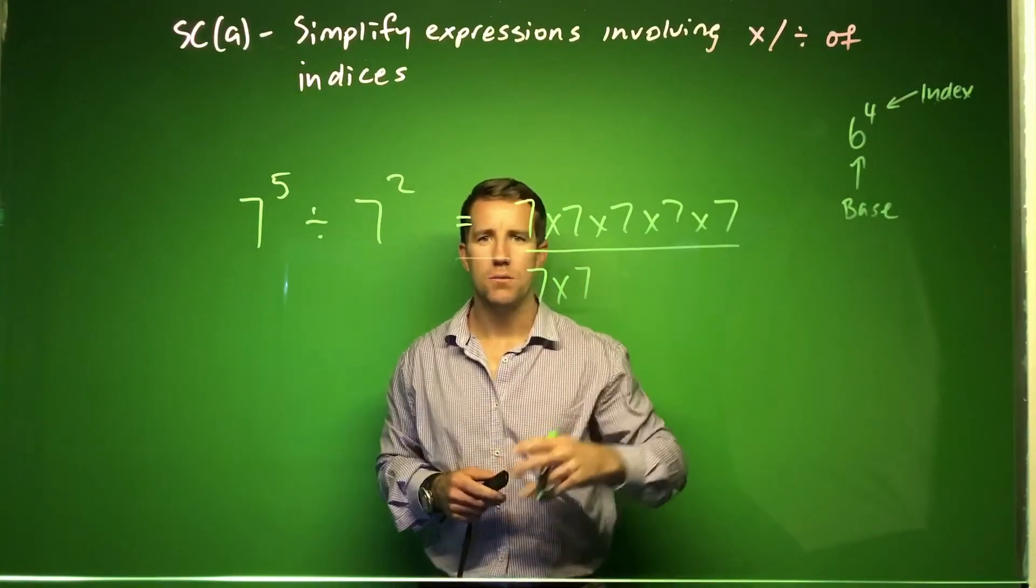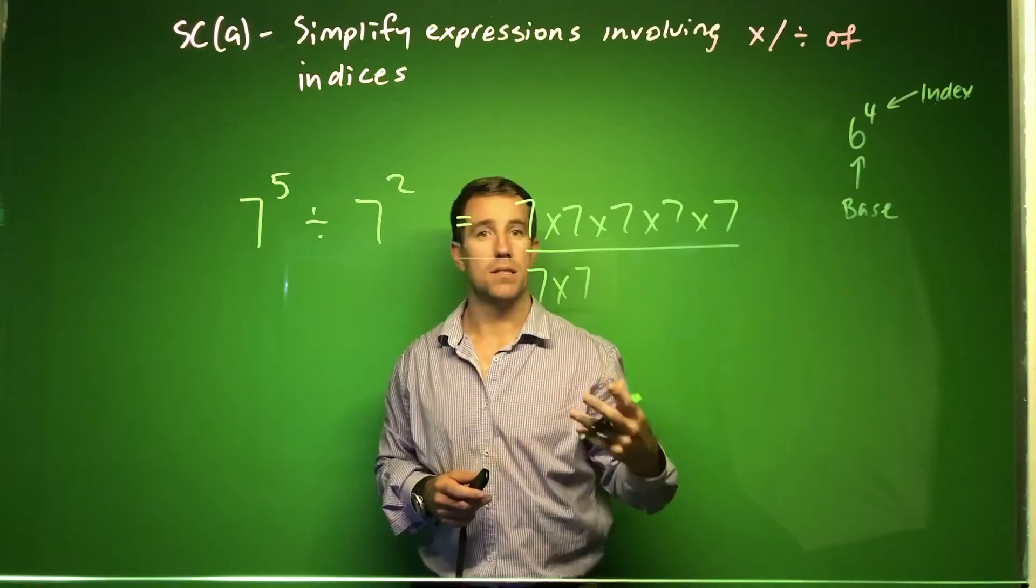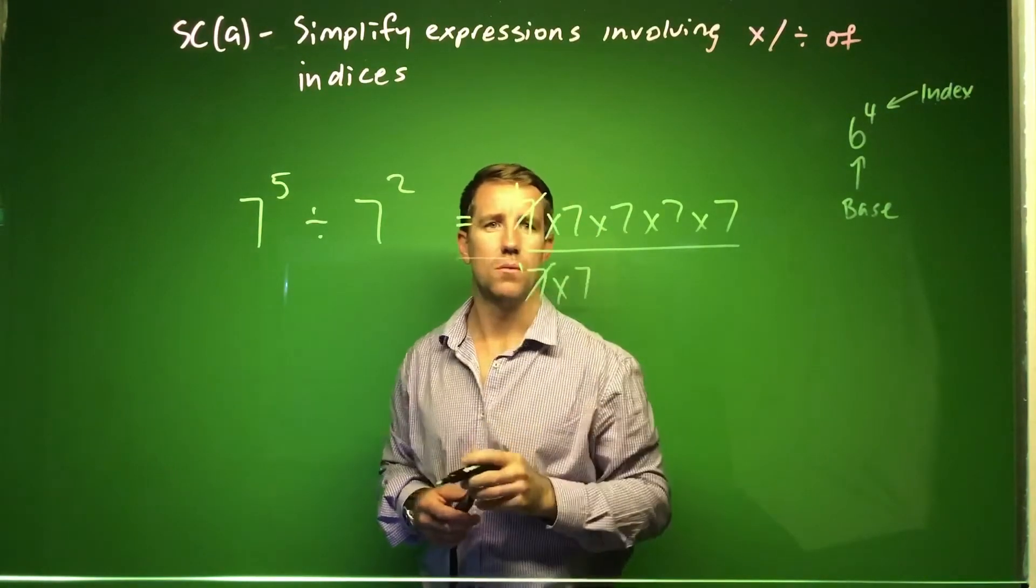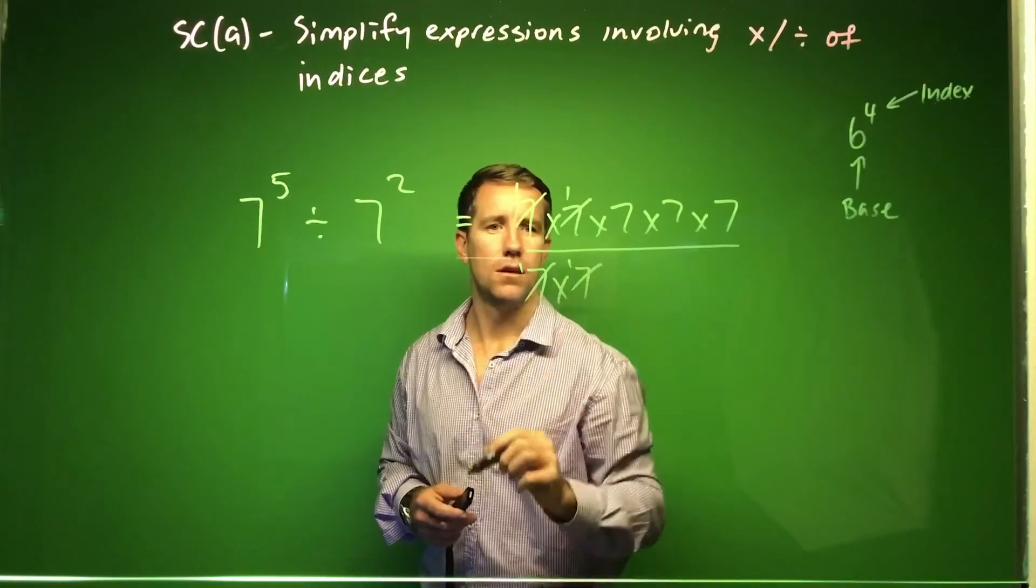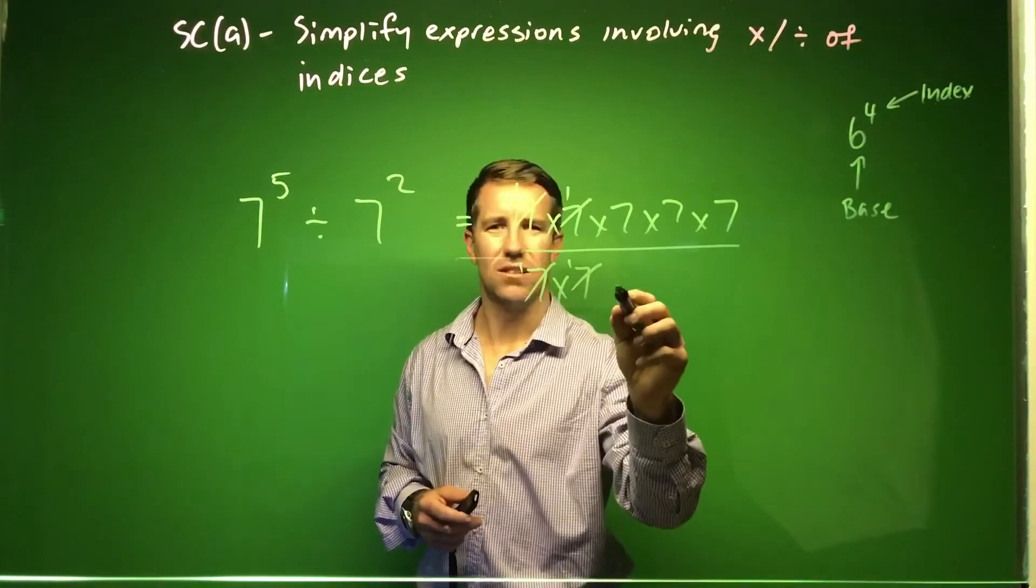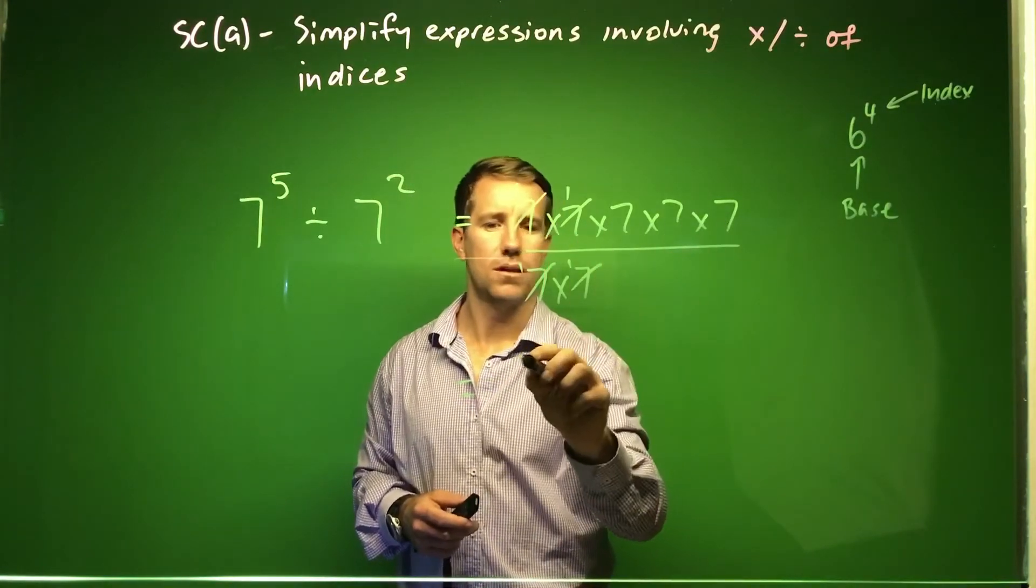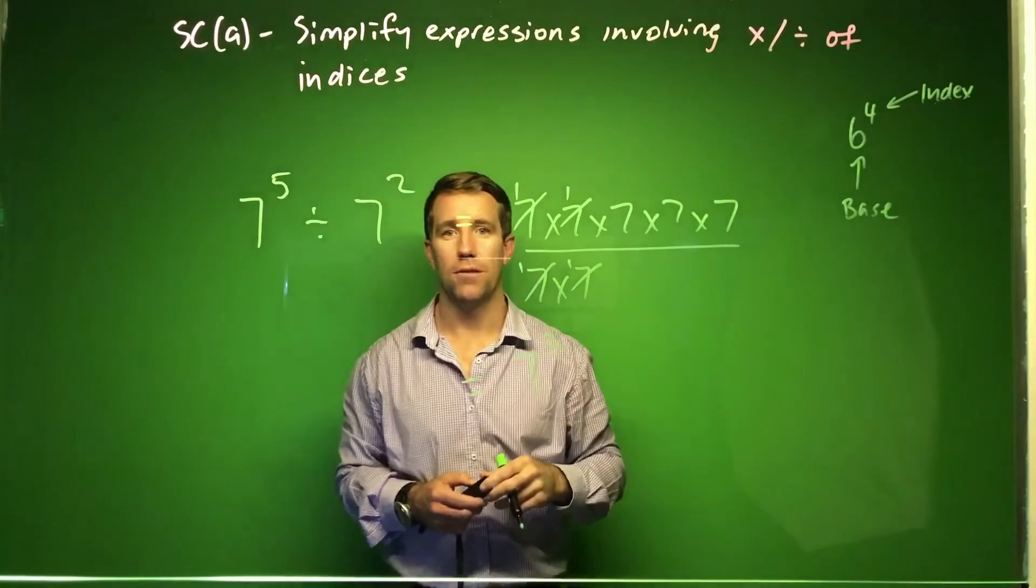To go ahead and simplify this, we know already that anything divided by itself gives us 1. So 7 divided by 7, I'm going to replace it with 1, and I've got another pair here I can simplify. On the bottom I've essentially got something over 1, and on the top here I've got 7 multiplied by itself 3 times left over.